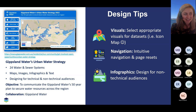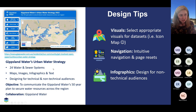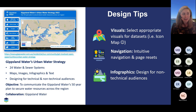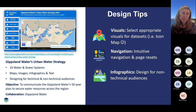The second example I want to take us through is the Gippsland Urban Water Strategy — specifically Gippsland Water's Urban Water Strategy. This is a really interesting study because while they're a regional water corporation, they've got 24 different water and sewer systems — very technical and complicated systems that they wanted to communicate to the general public. They wanted to do this by using a lot of maps, images, infographics, and text, designing for both technical and non-technical audiences. The purpose of this dashboard is to communicate Gippsland Water's 50-year plan to secure water resources across their region.